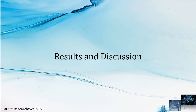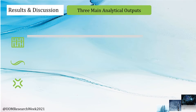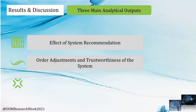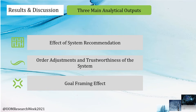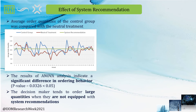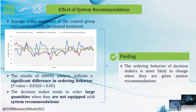Going to the results and discussion section. We utilized ANOVA analysis and there are three main analytical outputs: the effect of system recommendation, order adjustments and trustworthiness of the system, and the goal framing effect. When it comes to the effect of system recommendation analysis, we investigated the impact of system recommendation by comparing the average order quantities. Our results of ANOVA analysis indicate a significant difference in ordering behavior. The decision maker tends to order large quantities when they are not equipped with system recommendations.